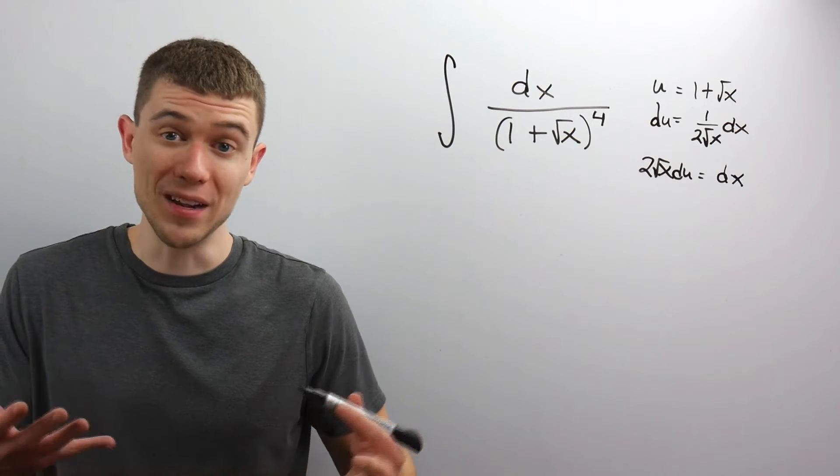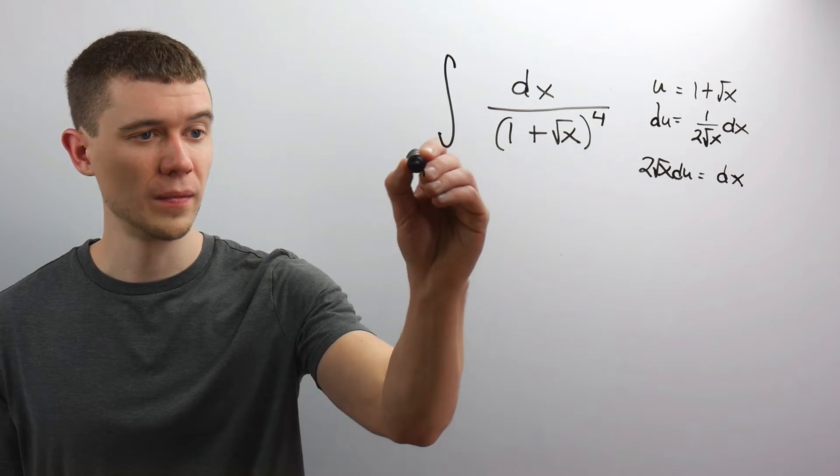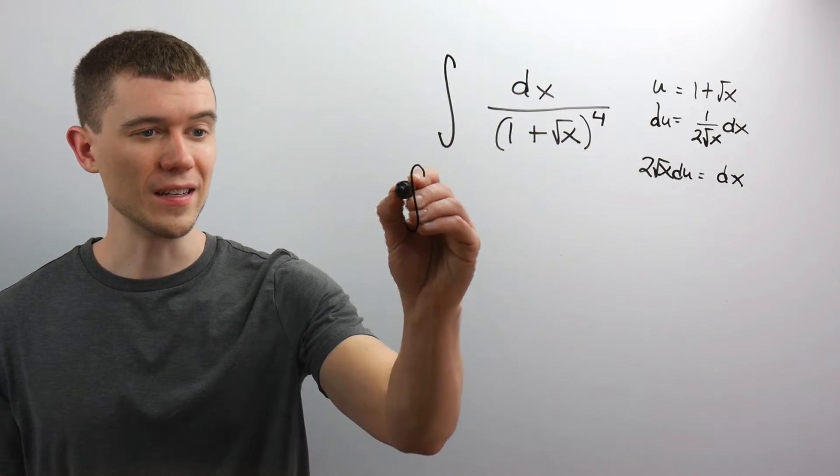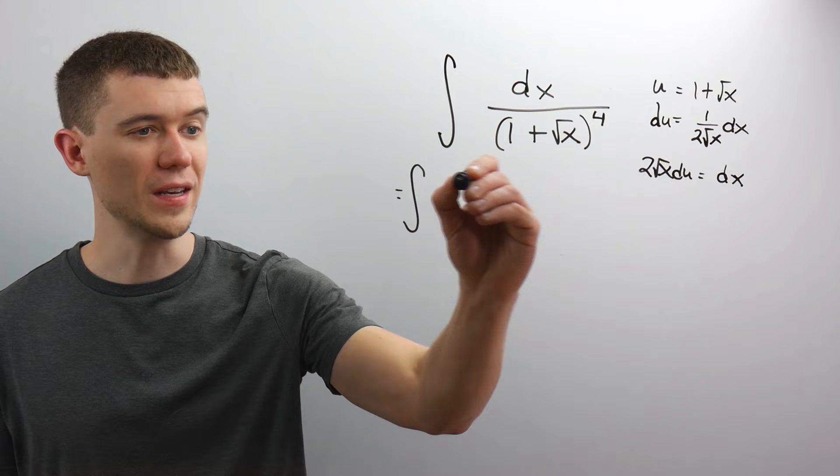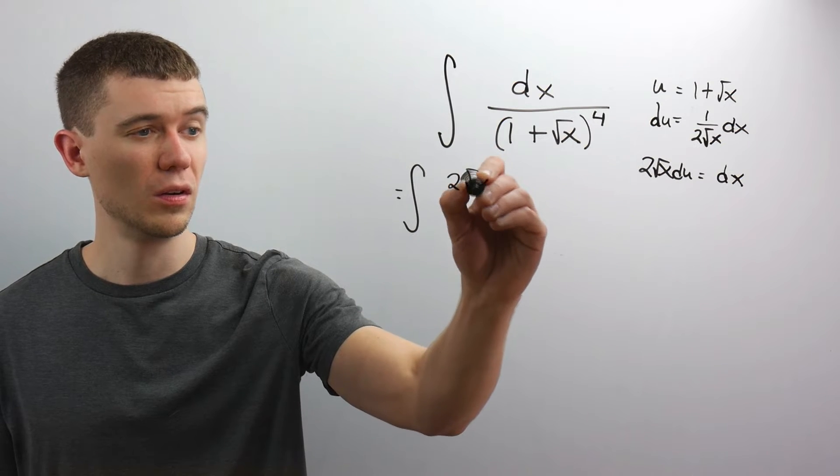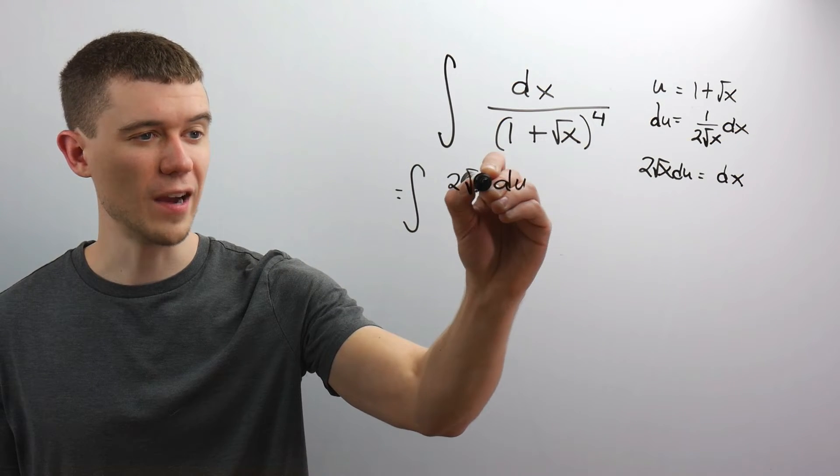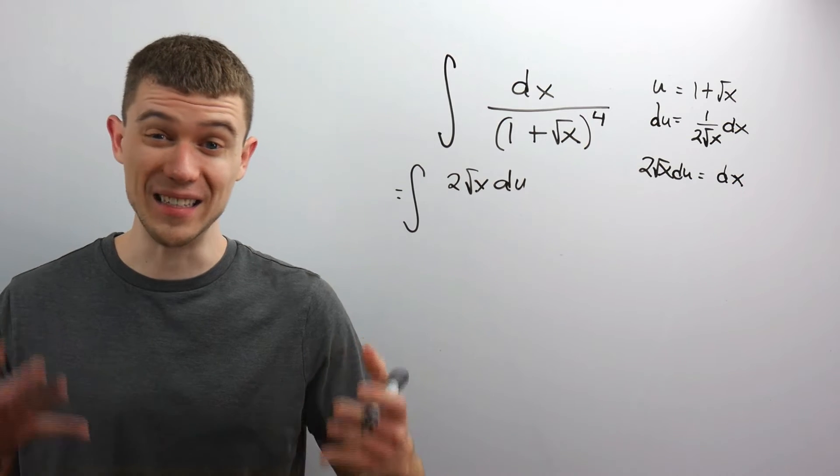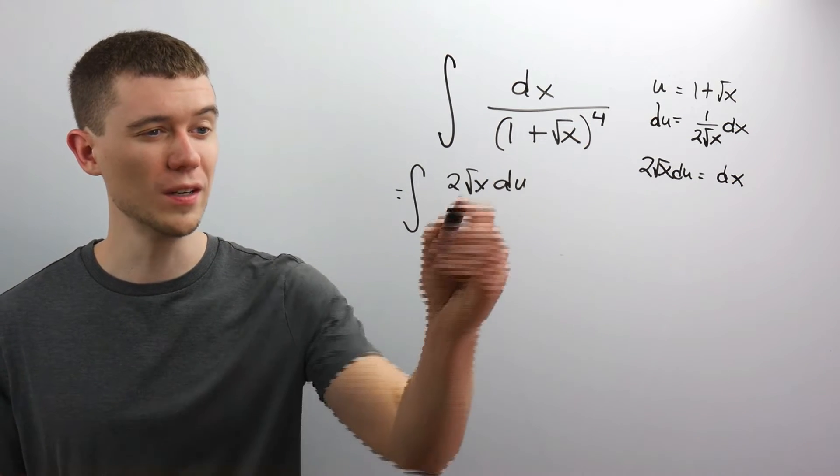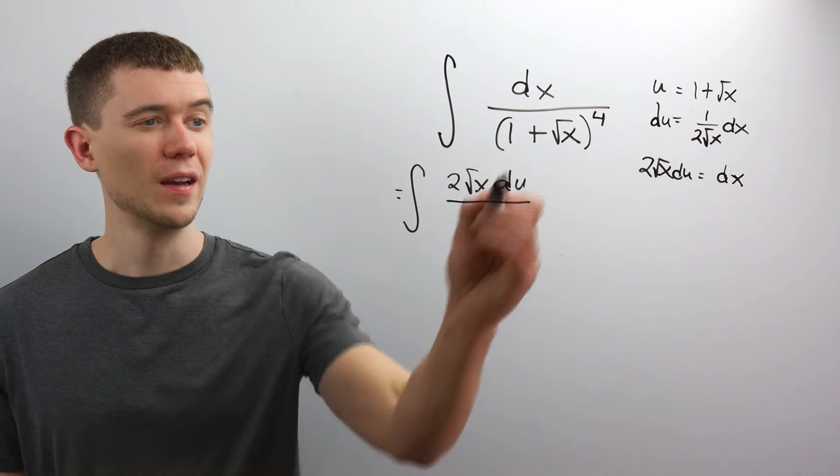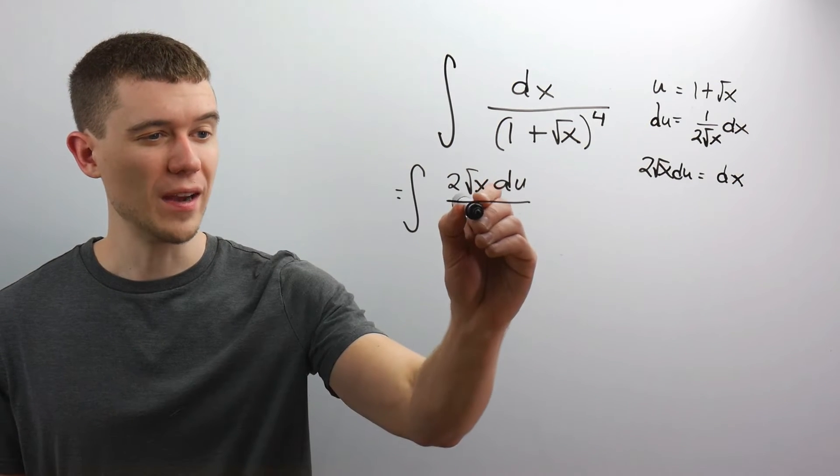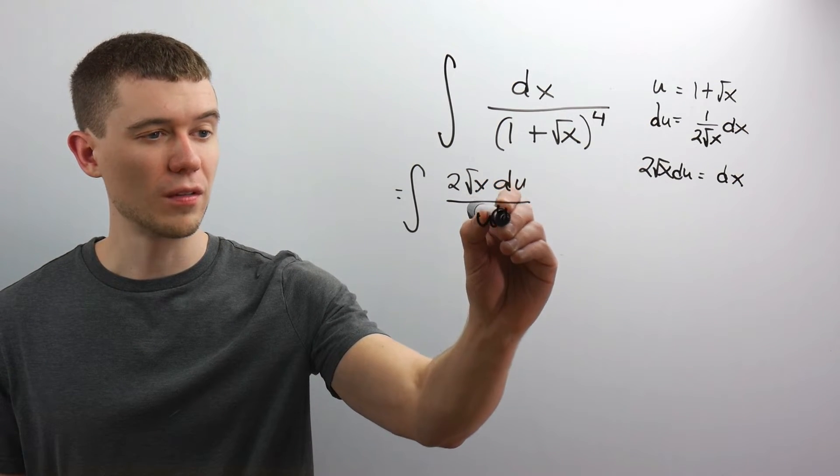And what we can do, we can make our substitution now. I know what the dx is in the numerator. I know dx to be 2 root x du. So I have my du in there. I need that du differential if I'm going to do this substitution. And in the denominator, 1 plus root x, we called that u. It's still to the 4th.